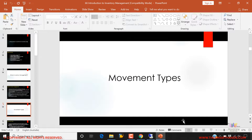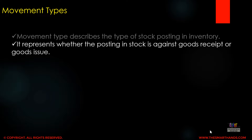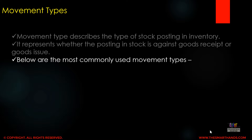We will talk more about movement types in a later video, so this is just an overview here. A movement type describes the type of stock posting in inventory. It represents whether the posting of stock is against goods received or goods issue. Below are the most commonly used movement types.